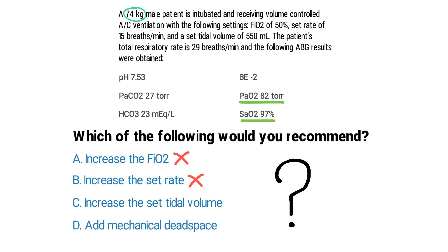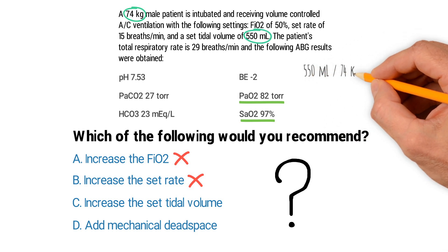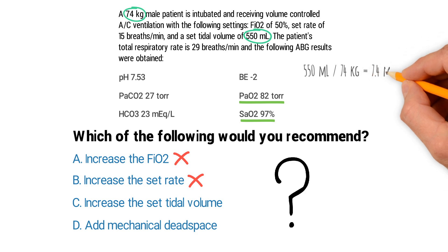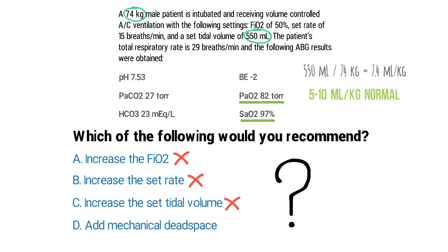By looking at the patient's body weight of 74 kilograms, you can check whether the tidal volume setting is appropriate. Take the tidal volume of 550 milliliters divided by the weight of 74 kilograms, and that gives you 7.4 milliliters per kilogram. This value falls within the normal range of 5 to 10 milliliters per kilogram, confirming that the tidal volume setting is appropriate. So we can rule out C as well.